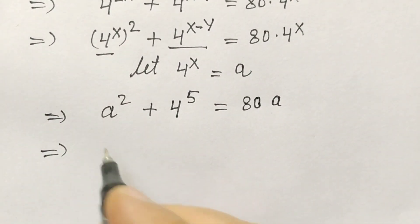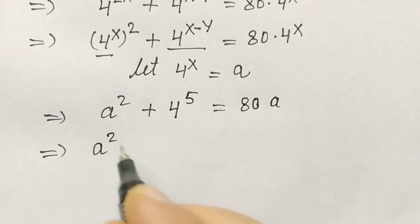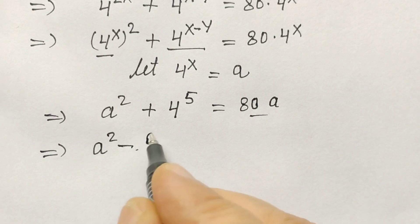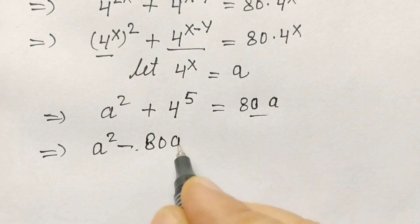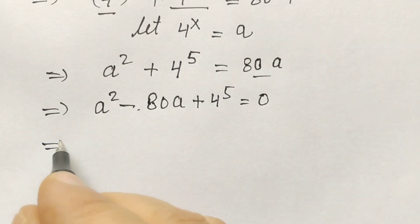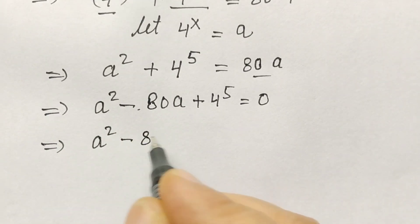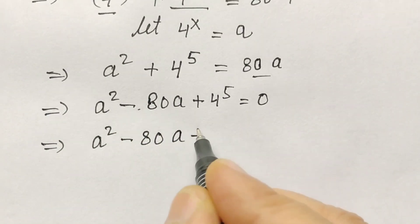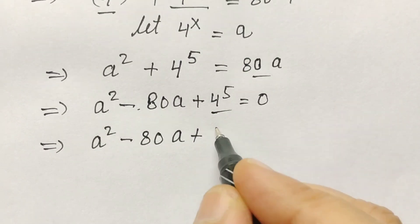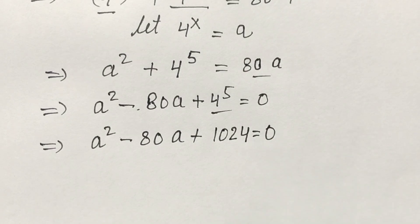If we rearrange the equation, we get a squared minus 80a plus 4 to the power 5, that is 1024, is equal to 0.